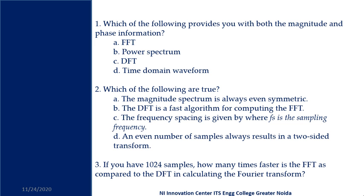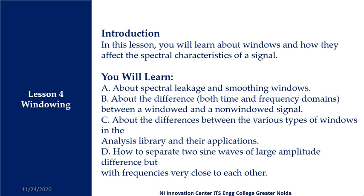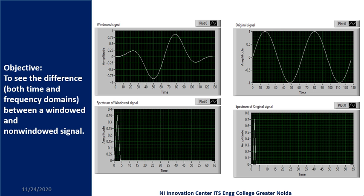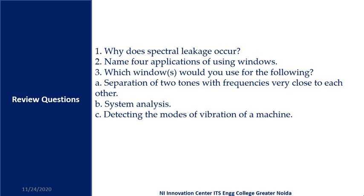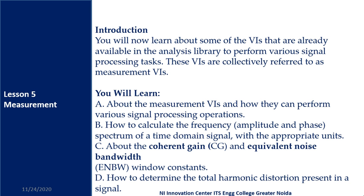After that, we will discuss some important concepts in unit number four on windowing. We'll see what is the concept of windowing — without windowing and with windowing. We will try to check the frequency and check our signals with windowed and non-windowed concepts, and try to plot the power spectrum density for the windowed and non-windowed signals.